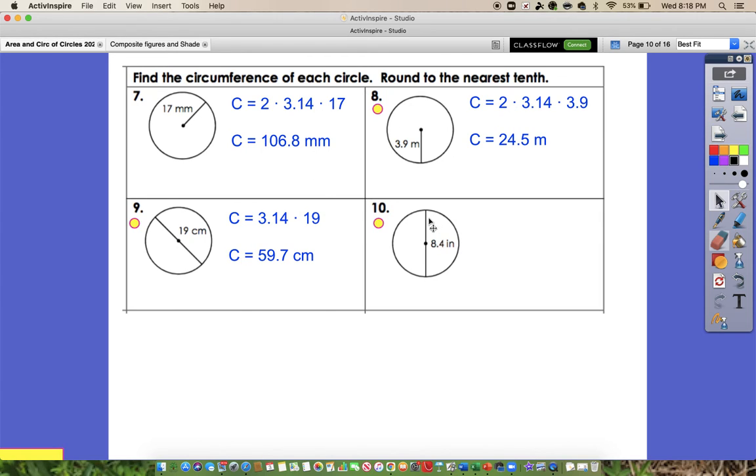And then number 10, we were given the diameter. So we're going to use pi times diameter, so 3.14 times 8.4. For that one, we should have gotten 26.4 inches.